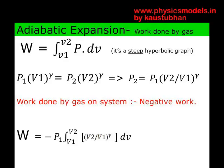We now look at adiabatic expansion. The general formula W = integral of P·dV still holds. The adiabatic expansion follows a steep hyperbolic graph, and the relation P1·V1^γ is used here — not the ideal gas equation. Using that relation to express pressure between two points corresponding to volumes V1 and V2, and noting that work done by the gas is negative, work comes to W = -P1·integral from V1 to V2 of (V1/V)^γ dV, evaluated as a definite integral.